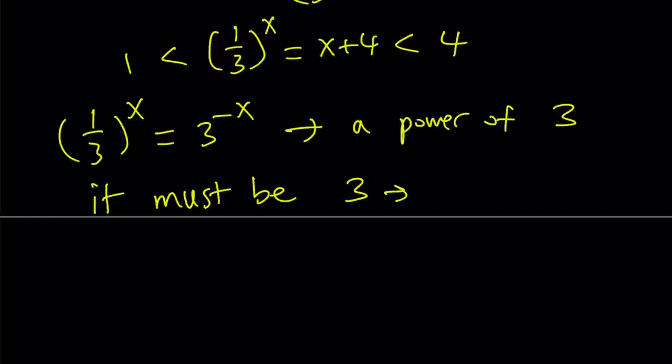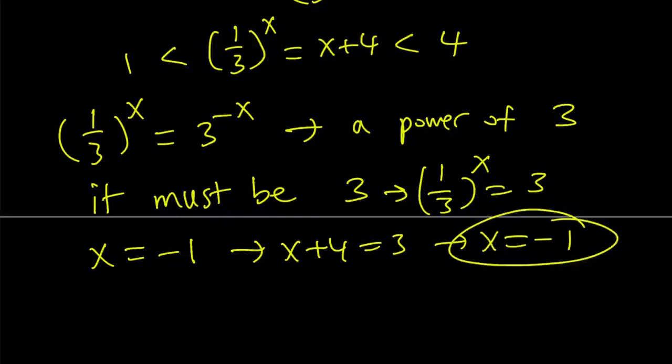This implies 1 over 3 to the power x equals 3, which means x is equal to negative 1. But, if 1 over 3 to the power x is equal to 3, that means x plus 4 is equal to 3, and that means x is equal to negative 1. They both checked. So, x equals negative 1 is definitely a solution. And, guess what? That is the only solution to this equation.